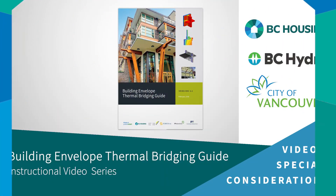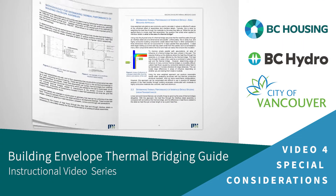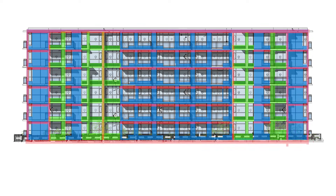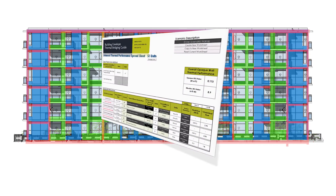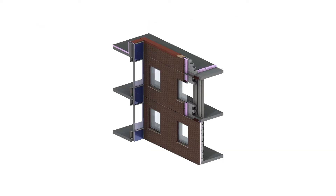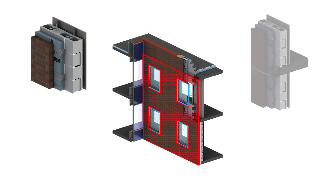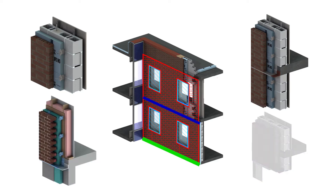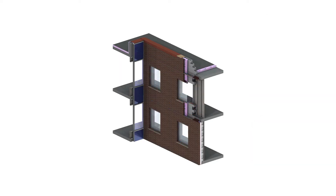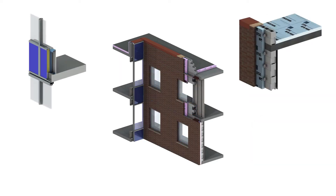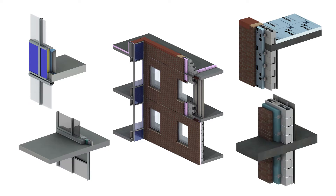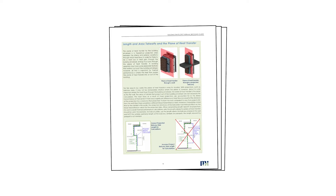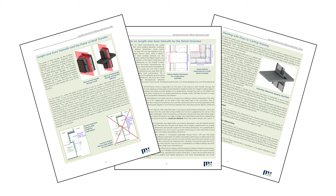Welcome to the fourth installment of the Building Envelope Thermal Bridging Guide instructional video series. In the previous videos, we went over the workflow of the U-value calculations using an example building. For most details, including the thermal bridging impacts into overall thermal transmittance calculations are straightforward. However, sometimes characterizing certain assemblies require special attention, or even a modified approach for considering the impact of thermal bridges. In this video, we highlight these special considerations and procedures for U-value calculations.